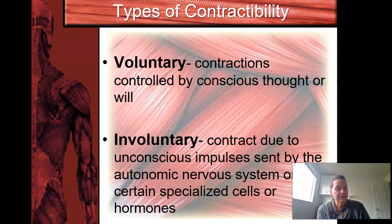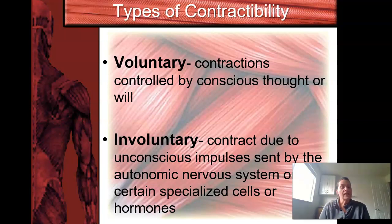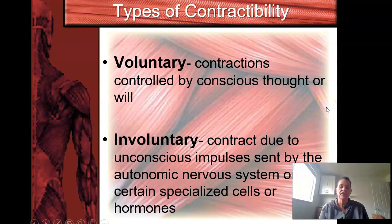Types of contractibility — contractibility is a characteristic of muscles. You have voluntary and involuntary. Voluntary means they are controlled by conscious thought; your brain is telling it to do it. Involuntary means it just happens automatically — unconscious impulses make it happen, sent through your autonomic nervous system or certain specialized cells or hormones.